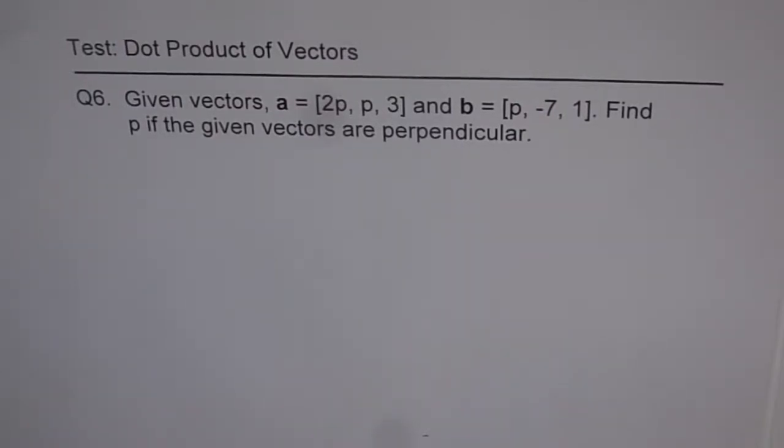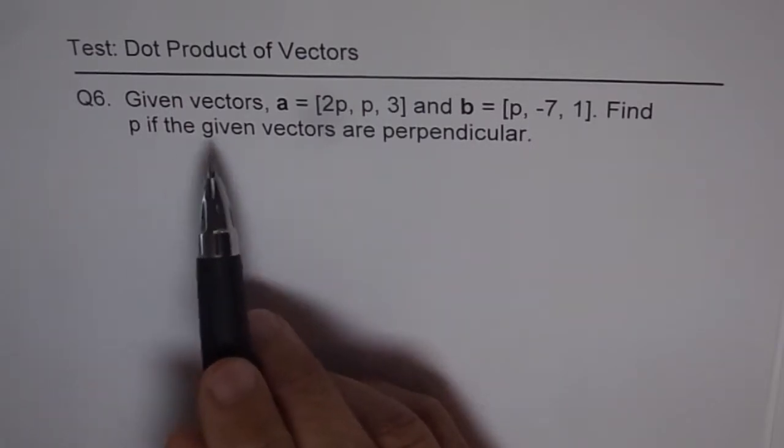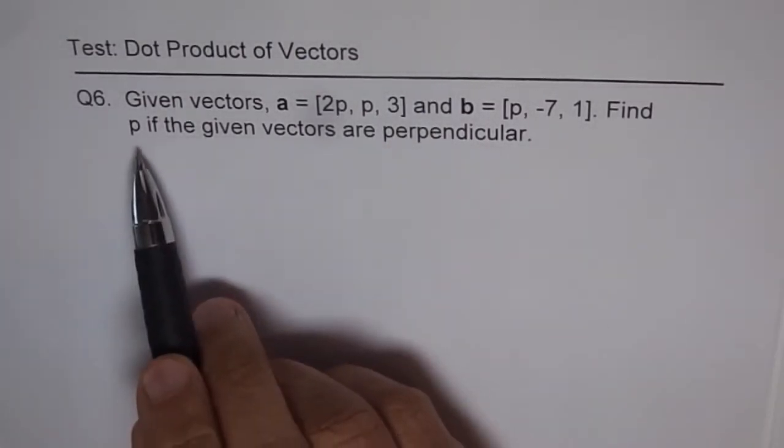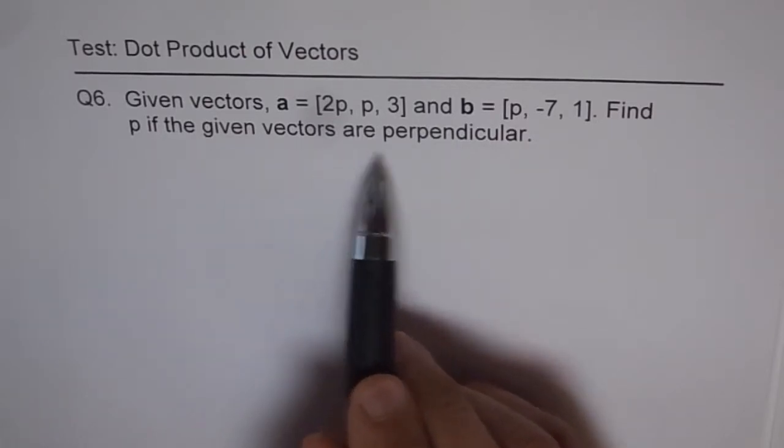Here is question number 6 on practice problem. Given vectors A and B, find P if the given vectors are perpendicular.